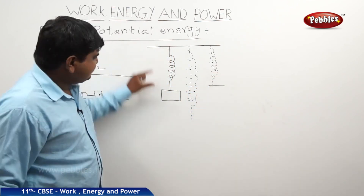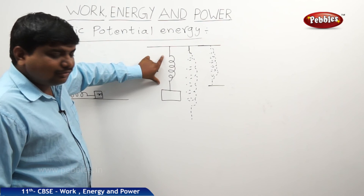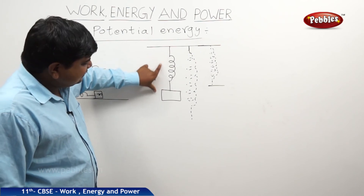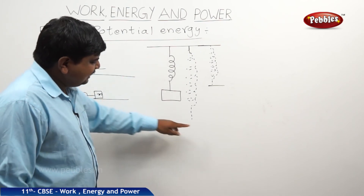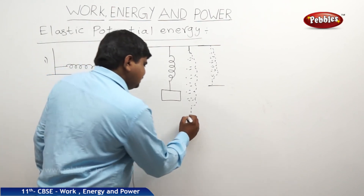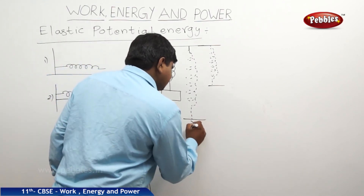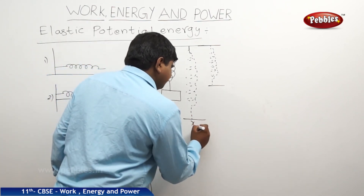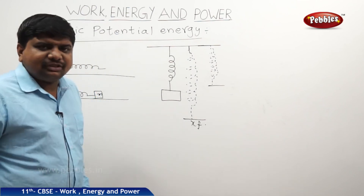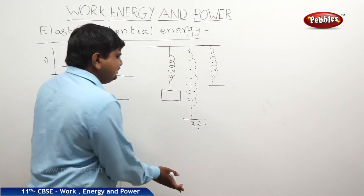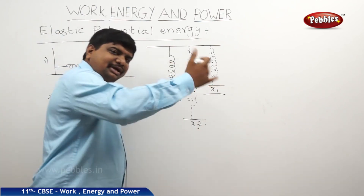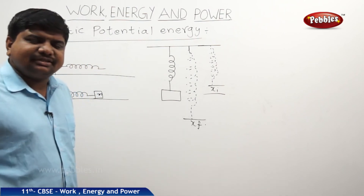This is the original distance or original length of the spring. Once it is expanded, it was expanded up to here. Let us take this as xf — the final position. Next, it is compressed; let us say this is xi because it is coming to the initial position.